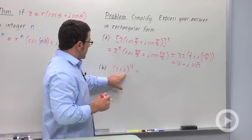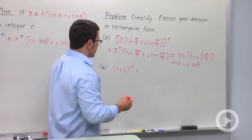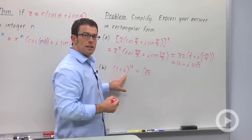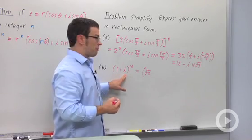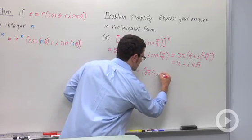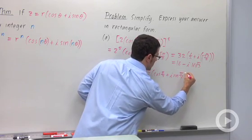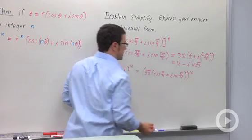So let me just say that the modulus of this is going to be root 2. And 1 plus i has an argument of pi over 4. So this is cosine pi over 4 plus i sine pi over 4. And that's all to the 16th power.